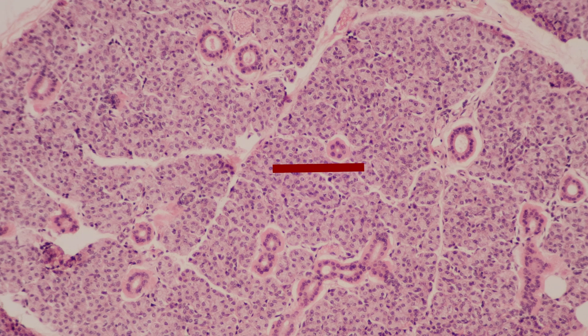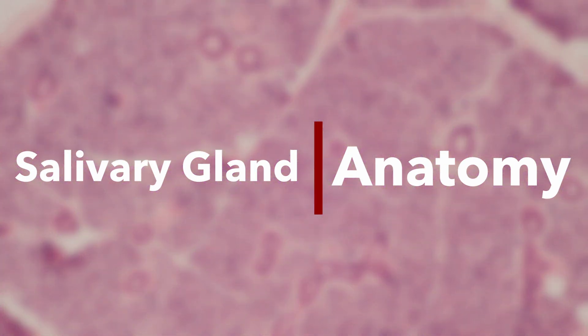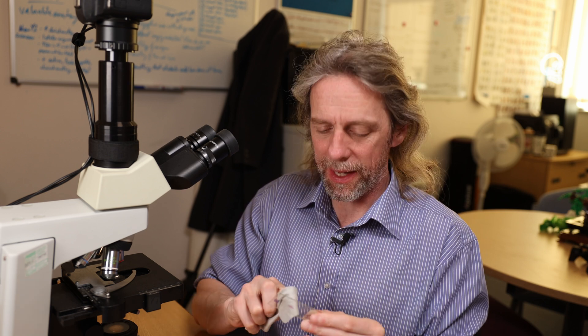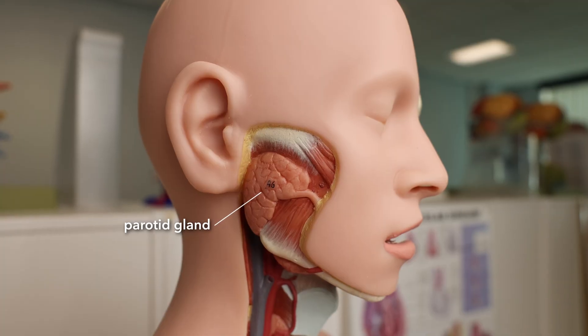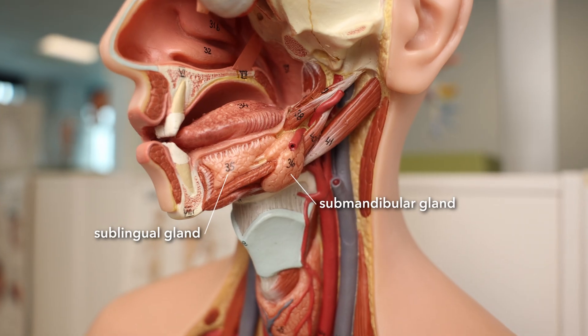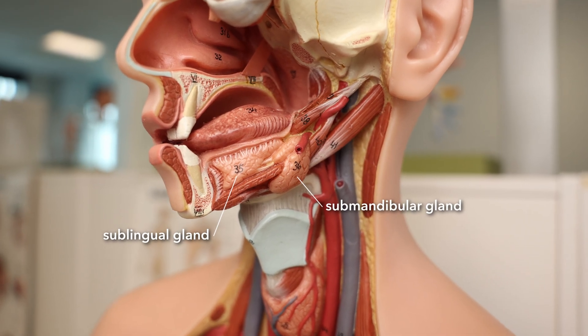There are three pairs of salivary glands — by pairs I mean there's a left one and a right one. We've got the parotid glands up here, we've got the submandibular glands, and we've got the sublingual glands.